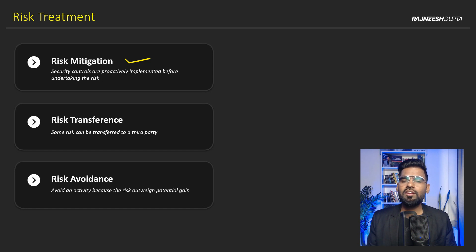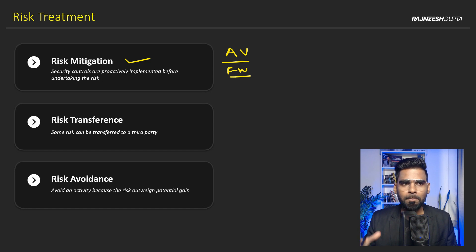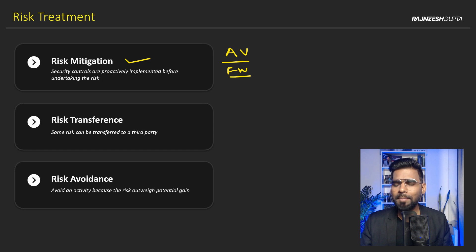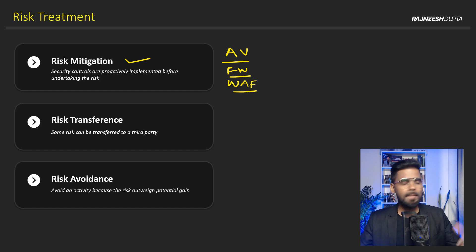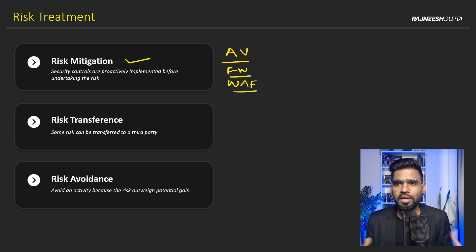We understand that any computer can be compromised, so we definitely need antivirus. By default we also need a firewall, since employees are going to access the internet. If you have a web application, you definitely need a Web Application Firewall — a WAF — from any vendor, to protect your web application. This falls under risk mitigation, where you have no choice but to deploy security controls.